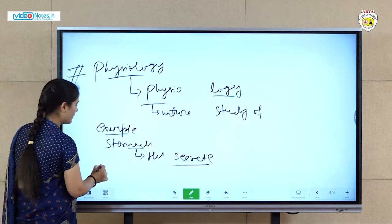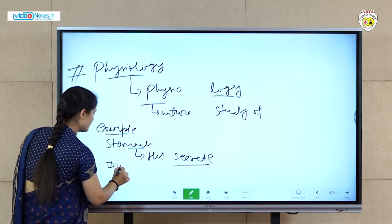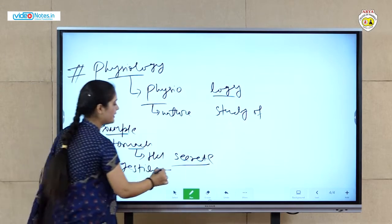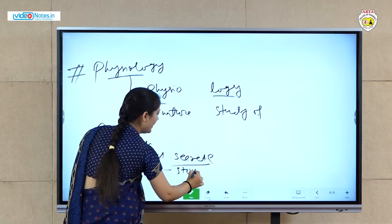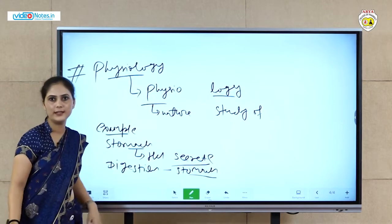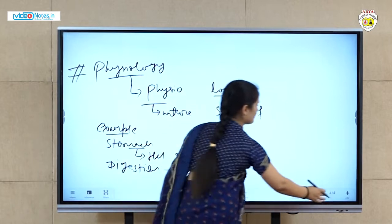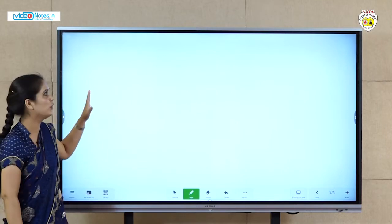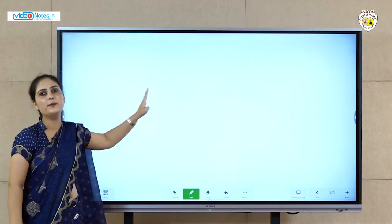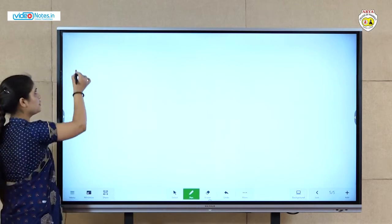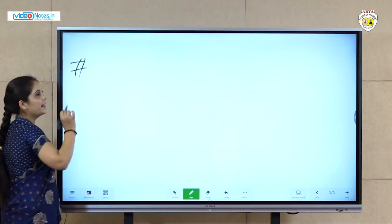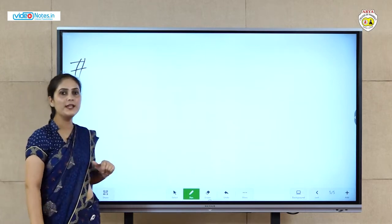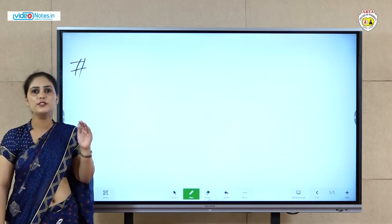Next, let's take digestion as an example. How digestion is occurring inside the stomach — this also comes under physiology. Then, anatomy and physiology together: these two words are incomplete without each other. So if we combine them and define, anatomy and physiology together cover structure and function.